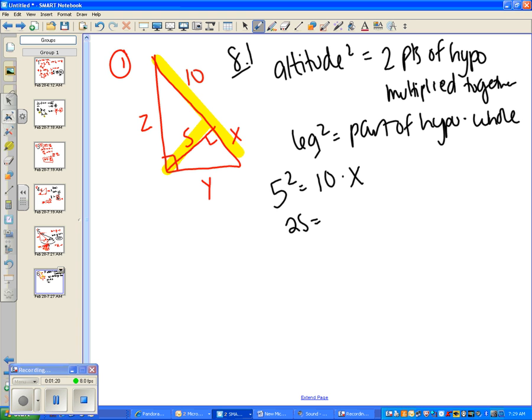5 squared is 25, and then you divide both sides by 10, and you got that x equals 2.5. B was the only correct answer, the only answer where x equals 2.5, so you really didn't even have to use this formula at all.